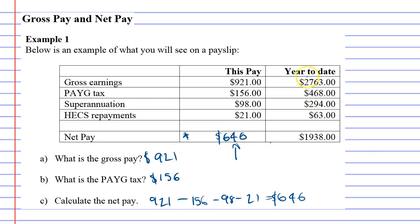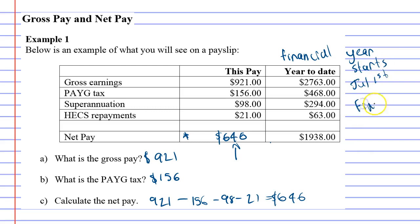Now I'll talk a little bit about the year-to-date. A financial year starts on July 1st and finishes on June 30th. So financial years actually start in the middle of the calendar year and finish in the middle of the next year. The year-to-date refers to how many weeks, fortnights, or months have passed since July 1st.